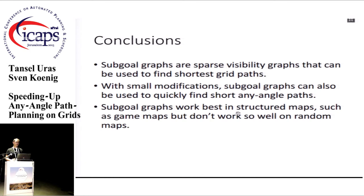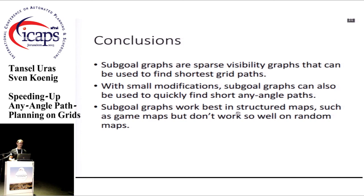In conclusion, sub-goal graphs are sparse visibility graphs that provide guarantees on finding shortest grid paths. They are much quicker to search compared to grids. By using Theta star and making small modifications, they can be used to find short any-angle paths very quickly. They are best suited for game maps compared to more structured or random maps. Thank you.